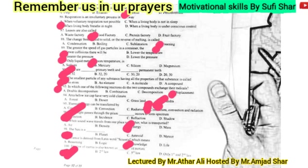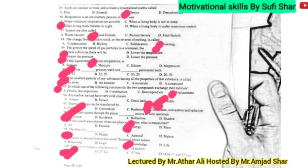Question 93: in which of the following reactions do two compounds exchange their radicals? The answer is double decomposition. For example, hydrochloric acid reacting with sodium — exchanging chlorine and hydrogen — gives NaCl and water. This exchange reaction is called double decomposition.